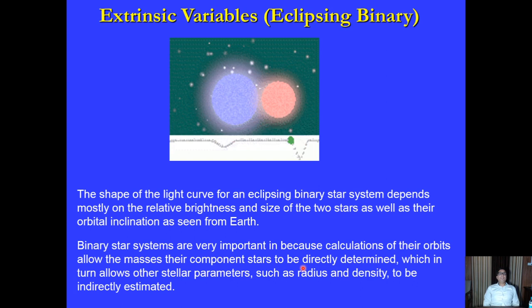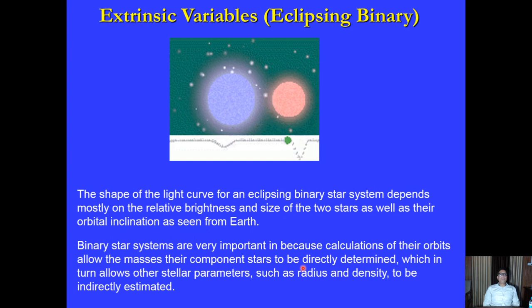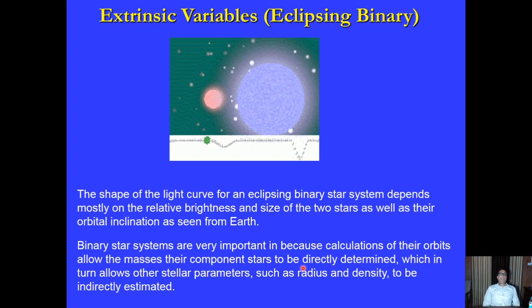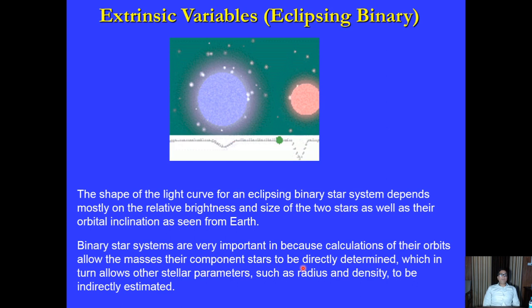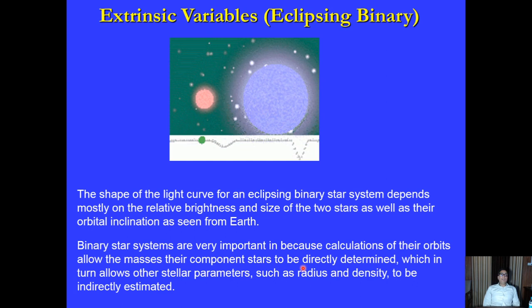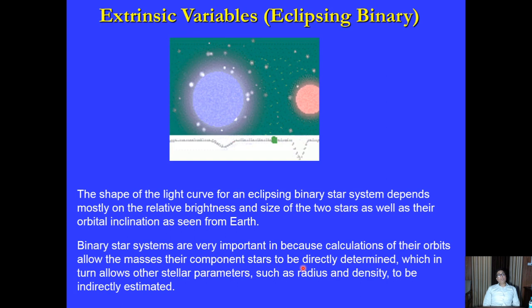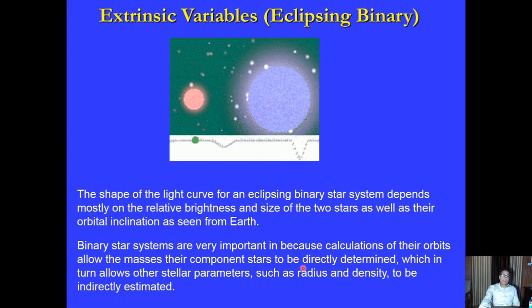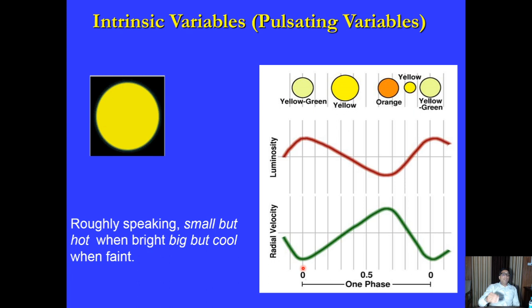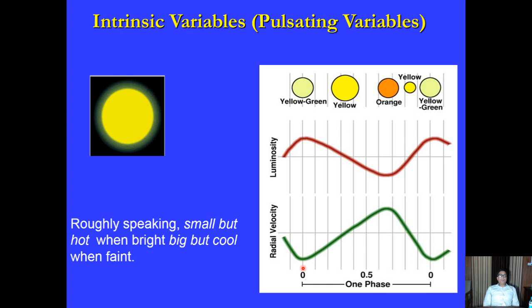Here I have shown an animation of extrinsic eclipsing variables — one star passes in front of another, producing an eclipse. The result depends on the inclination of the orbit to the line of sight. Eclipsing stars are useful for determining parameters like mass, which is very difficult to measure for individual stars. Knowing the mass allows determination of the radius and density of the star. Intrinsic pulsating variables show expansion and contraction, producing light variations visible as a light curve.